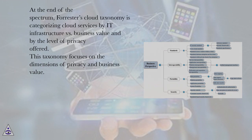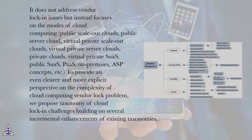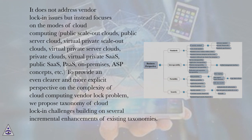At the end of the spectrum, Forrester's cloud taxonomy categorizes cloud services by IT infrastructure versus business value and by the level of privacy offered. This taxonomy focuses on the dimensions of privacy and business value. It does not address vendor lock-in issues but instead focuses on the modes of cloud computing: public scale-out clouds, public server cloud, virtual private scale-out clouds, virtual private server clouds, private clouds, virtual private SaaS, public SaaS, PaaS, on-premises, ASP concepts, etc.